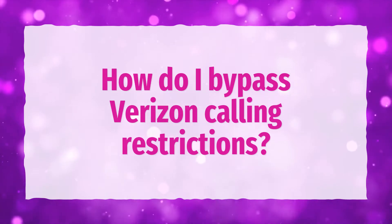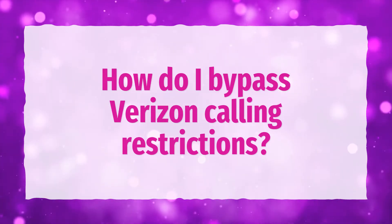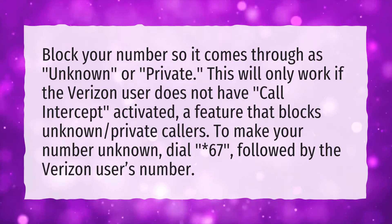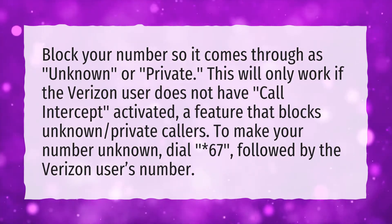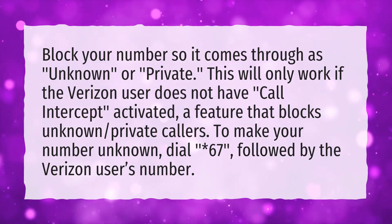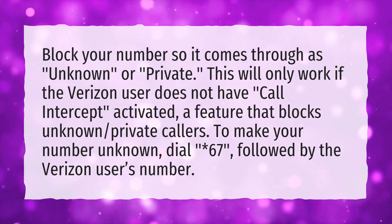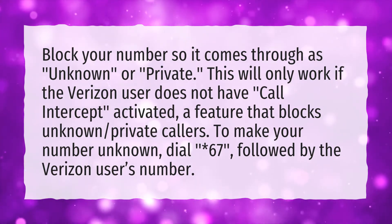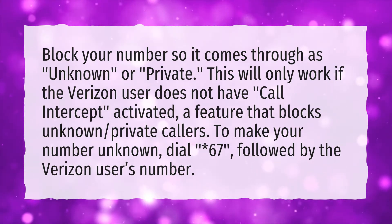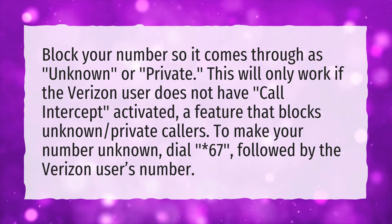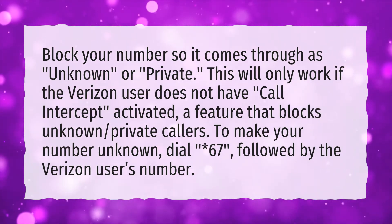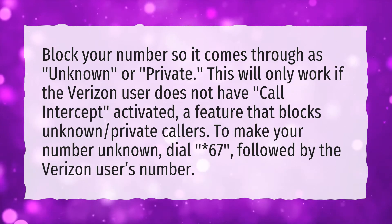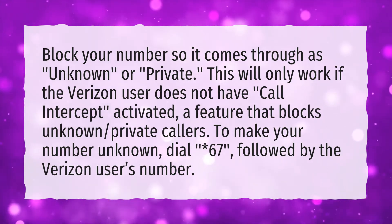How do I bypass Verizon calling restrictions? Block your number so it comes through as unknown or private. This will only work if the Verizon user does not have call intercept activated, a feature that blocks unknown private callers. To make your number unknown, dial *67, followed by the Verizon user's number.